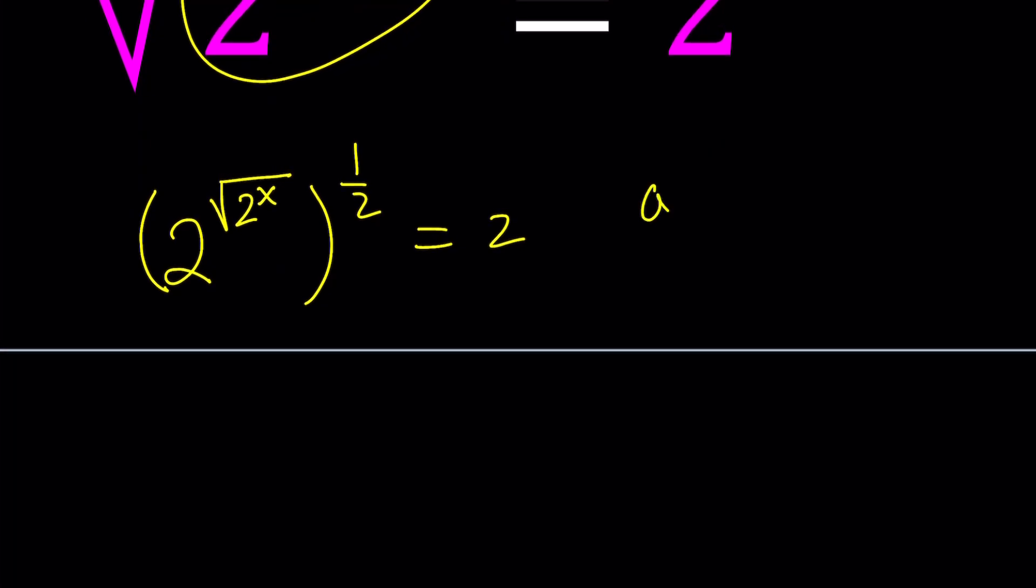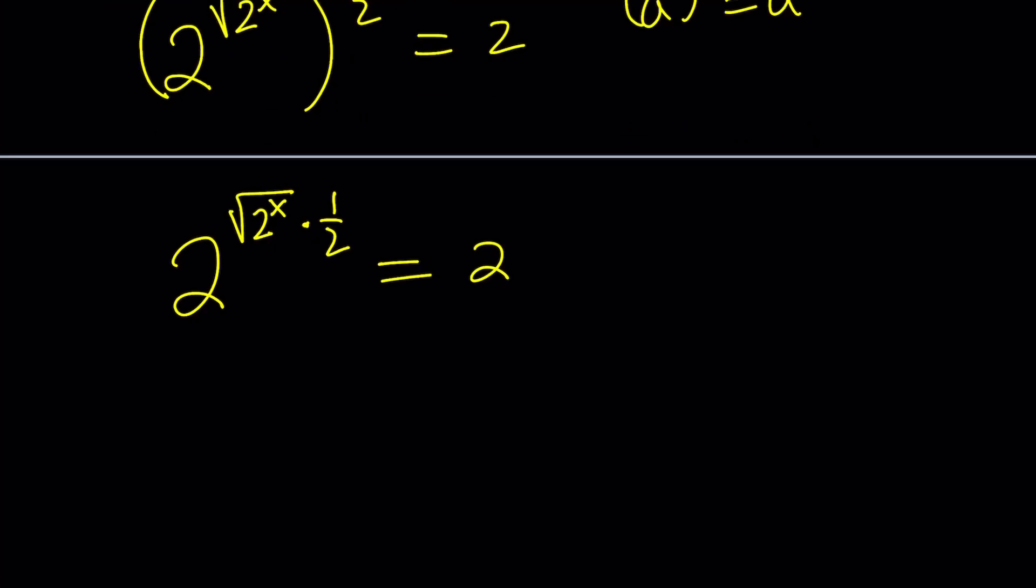When you have a to the power x to the power y, the powers are multiplied or the exponents are multiplied. We're going to use the same rule here. Multiply the powers, you're going to get square root of 2 to the x multiplied by 1 half. You could also write it as divide by 2, same thing.